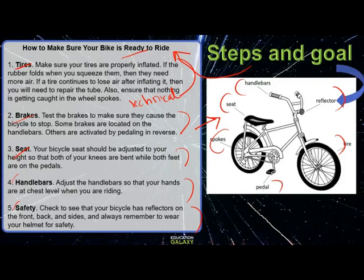Now we have seen how in three different kinds of texts the ideas, concepts, individuals, and events are related. Next time you read these documents and articles, make sure to notice how the ideas refer to each other and how they are related — and you'll understand bigger things better. More later, bye bye!